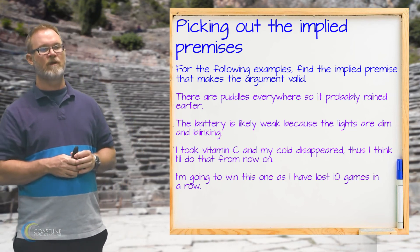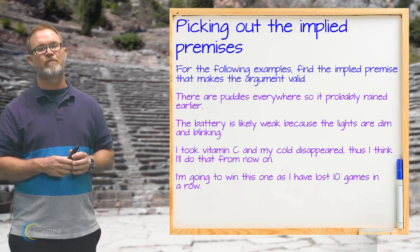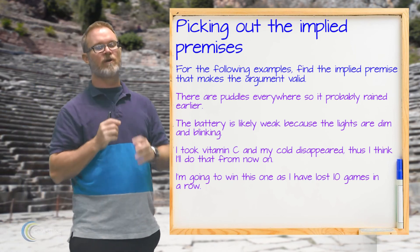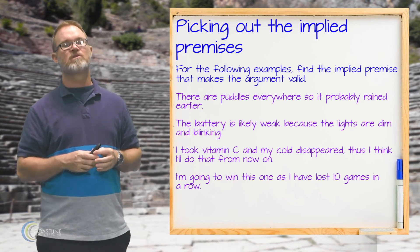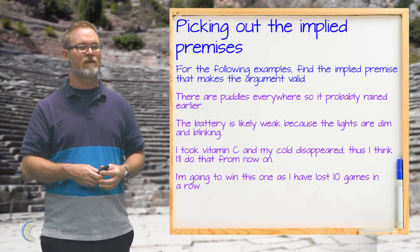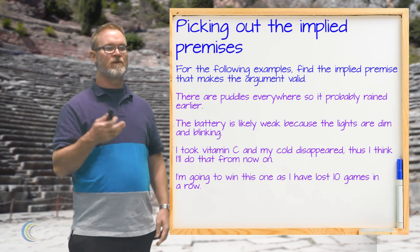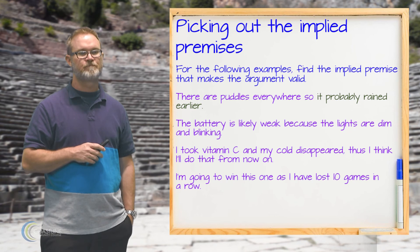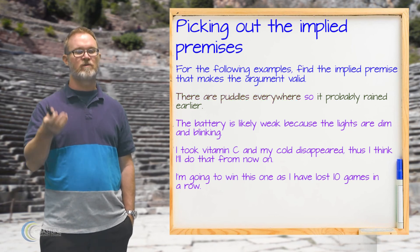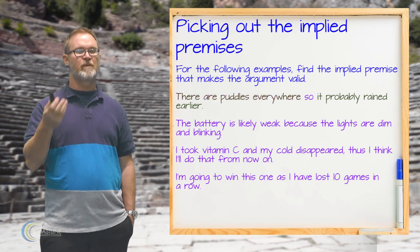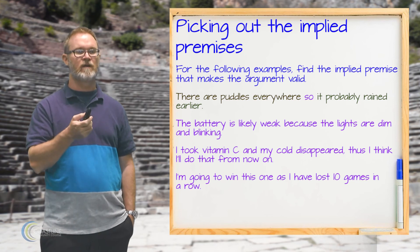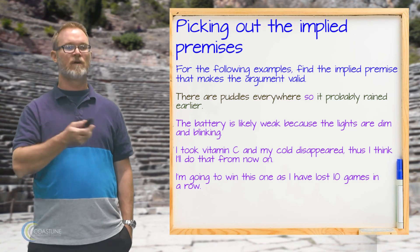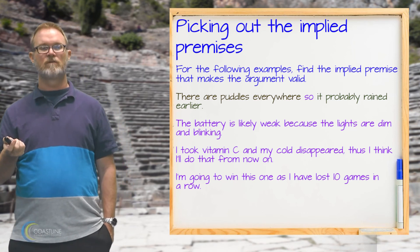First example: there are puddles everywhere, so it probably rained earlier. The conclusion is that it probably rained earlier, and the premise is that there are puddles everywhere. To make this an inductively strong connection, we'd plug in something like: in most cases, when there are puddles everywhere, it has rained earlier.